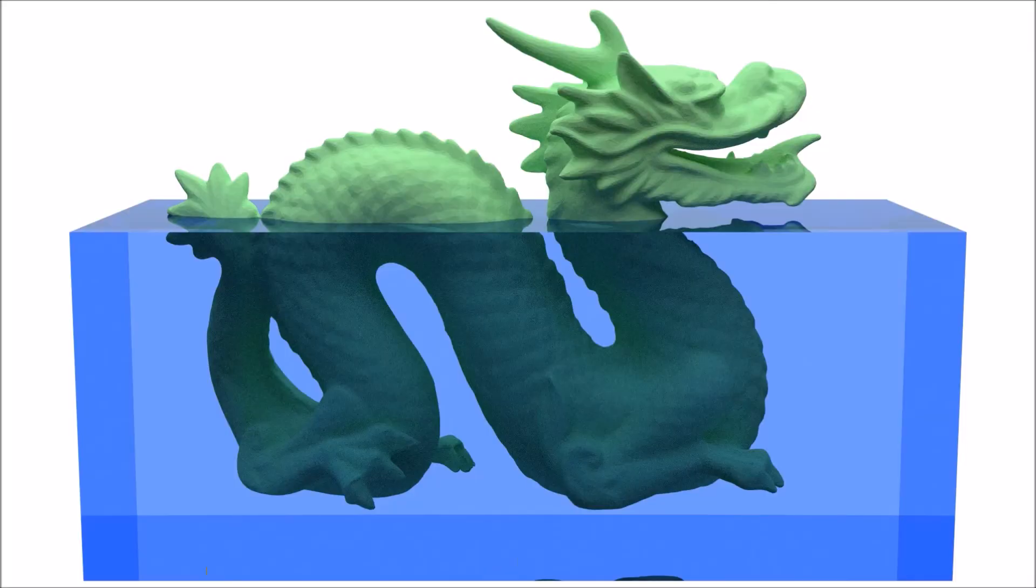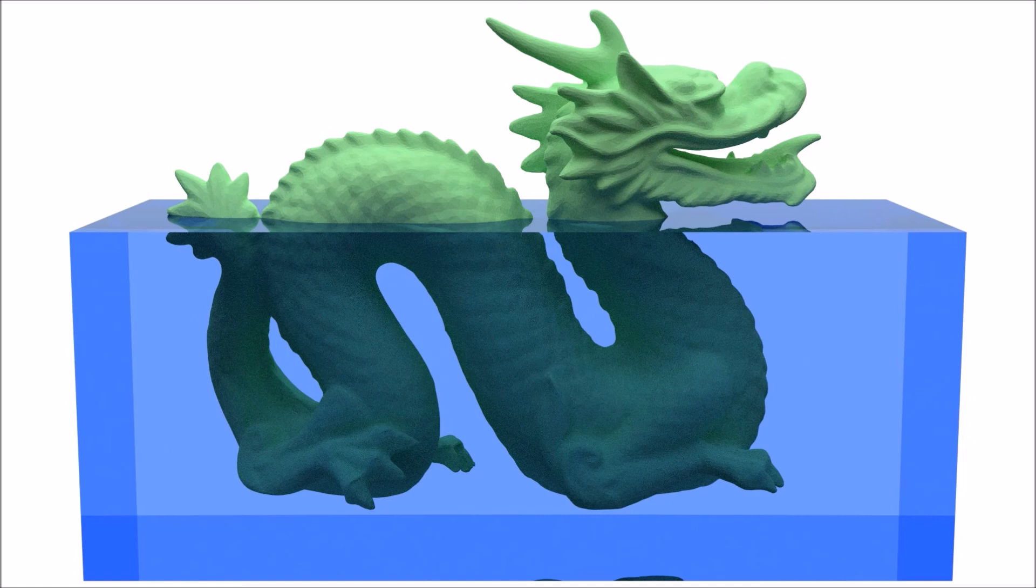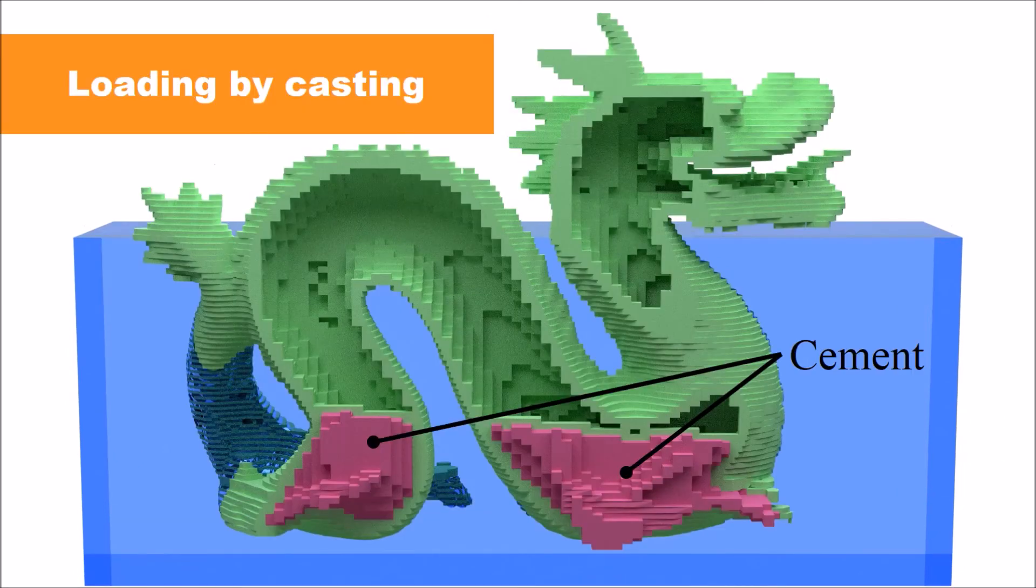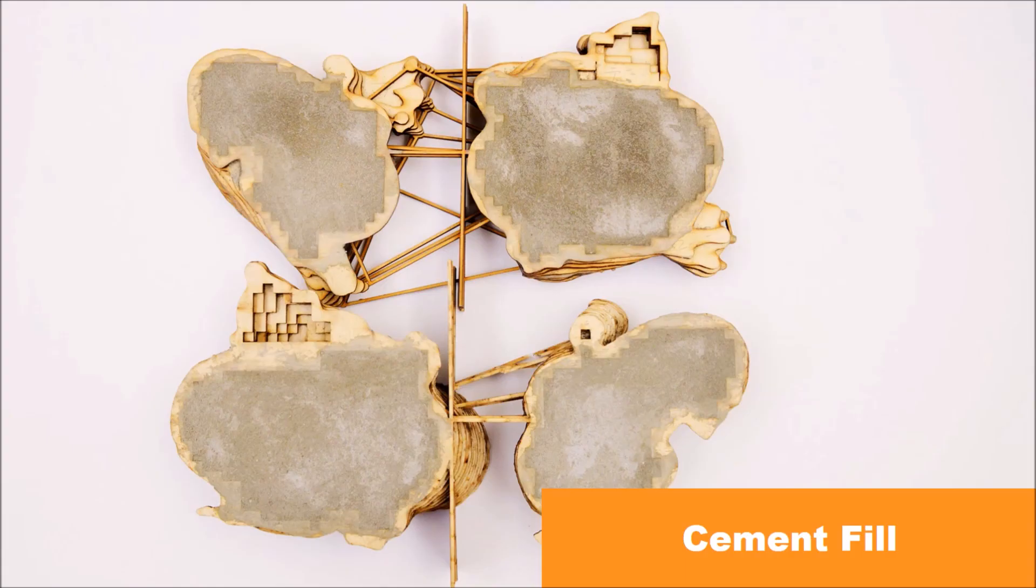We fill high density material like cement inside of this dragon to make it float stably. We create a pocket inside of this dragon. Cement is poured in the pocket to balance the dragon. The mass of the pocket wall is not negligible for the buoyancy design. Thus, it influences the shape of the cement. We use an iterative method to find the correct shape for pockets. This is the pocket of the dragon with cement filled.